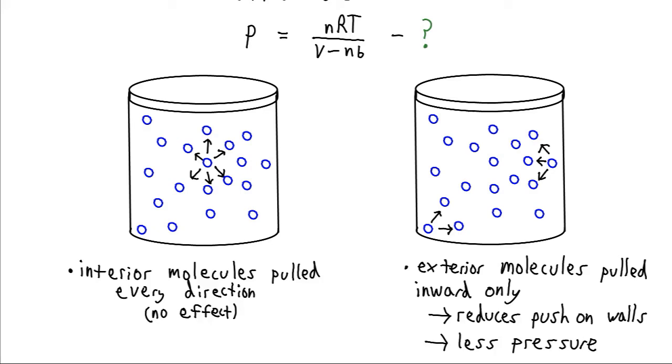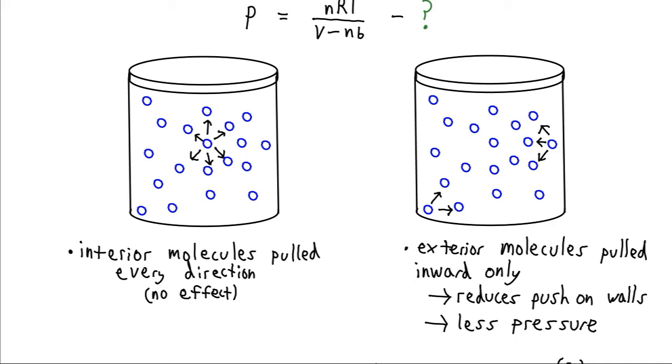What we do have to consider is the molecules on the edge of the container, because they get pulled inward, but there's no gas molecules on the other side to pull them the opposite direction. And so this is going to be our net reduction in pushing when they collide on the edges of the container. And that's going to reduce our pressure.